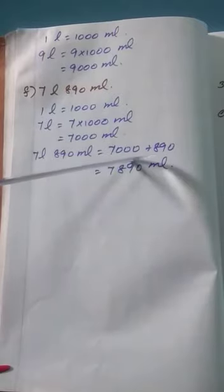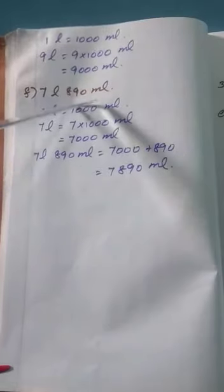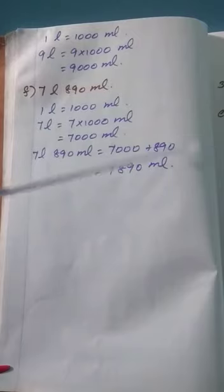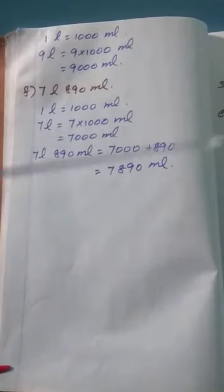Next, see the next sum: 7 liter 890 milliliters. In this sum, liters and milliliters are given. You have to convert the liters into milliliters and then add both milliliters. 1 liter equals 1000 milliliters. 7 liters equal 7 into 1000, which is 7000 milliliters. So the question becomes 7000 plus 890. The answer is 7890 milliliters. This is the method of converting liters and milliliters into milliliters.